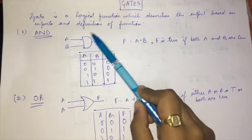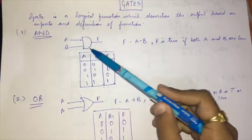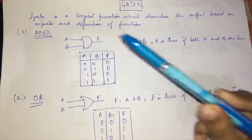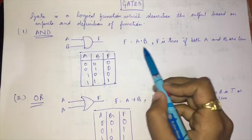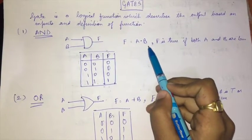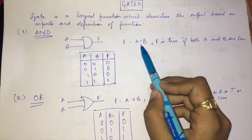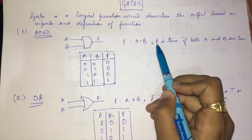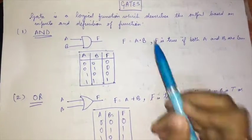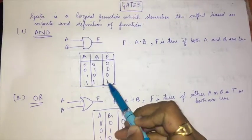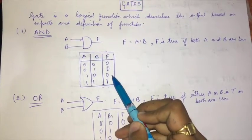The first gate is the AND gate. The symbol is this, and the logical function is f = A·B, where the dot represents the AND operation. f is true if and only if both A and B are true; for all other cases it is 0. This is the truth table for the AND gate.